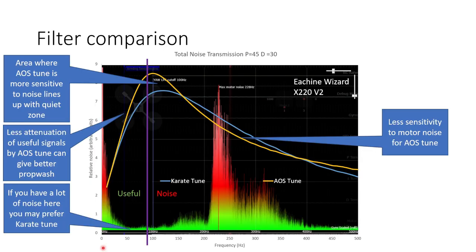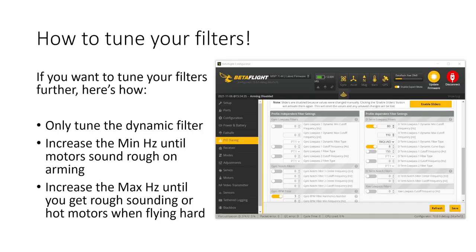We can see this even more clearly if we overlay the noise transmission plot on a black box log. This is from the Eachine Wizard and you can see this quiet zone that goes from about 60 hertz all the way up to about 200 hertz. And you can see that the noise here is a lot less than the noise at 0 hertz and in the motor band. And so this type of log where you have this very quiet zone is ideal for the AOS tune because you're not suffering too much from the increased sensitivity between 90 and 170 hertz because there's just not any noise there. So once you've picked which filter approach you think will work best for you, whether it's the karate tune or the AOS tune, if you want to tune your filters further here's how to do it.